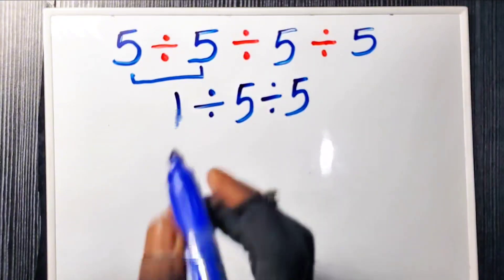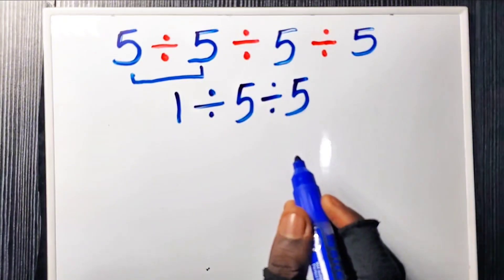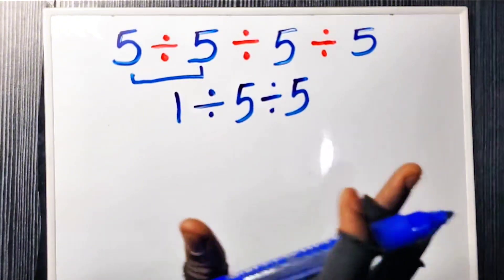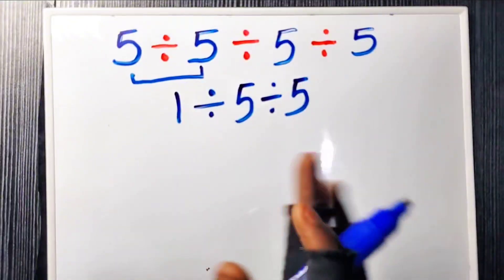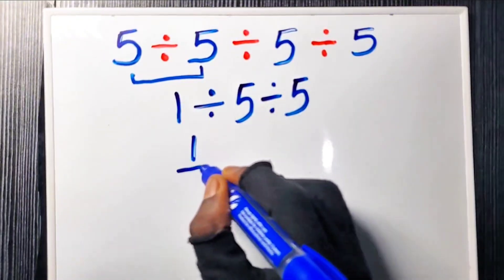Next pair: one divided by five. This is where people panic, but it's just a fraction: one over five.